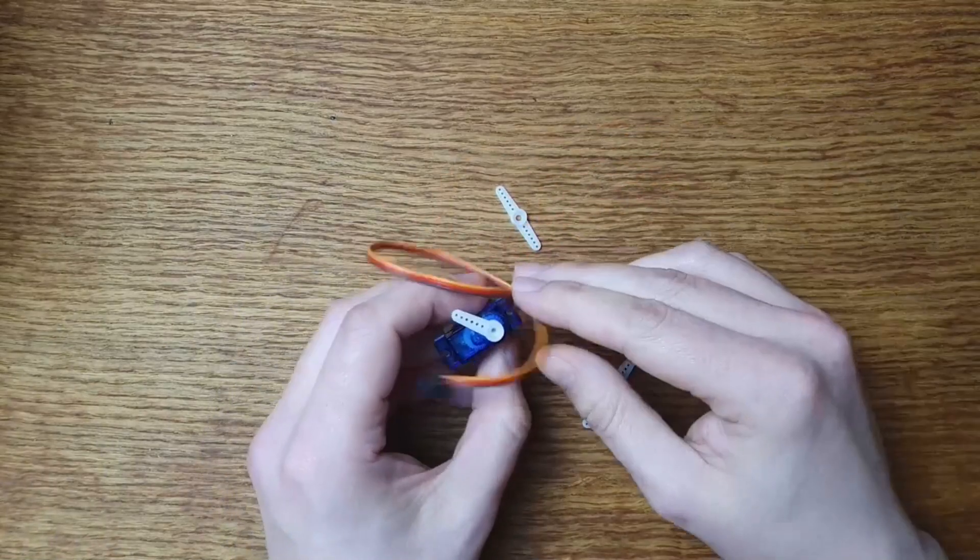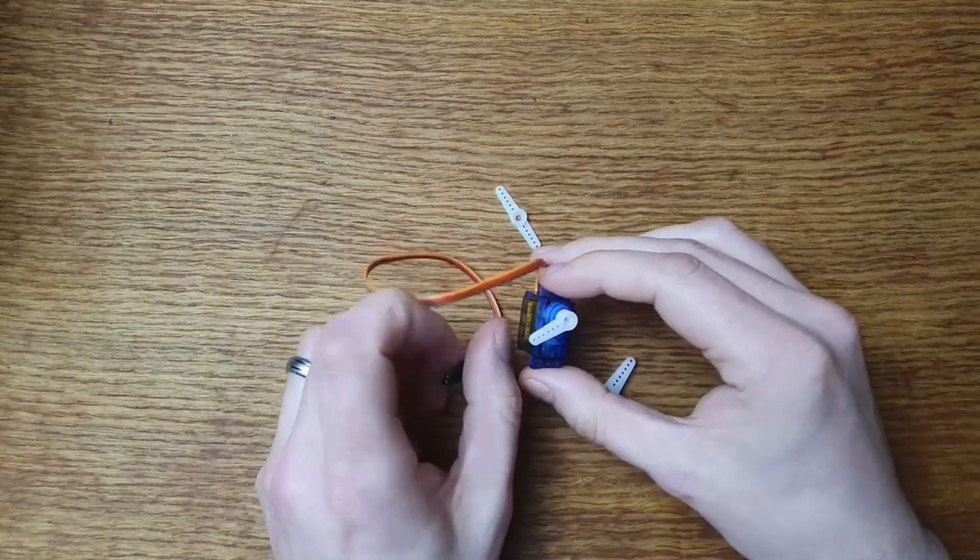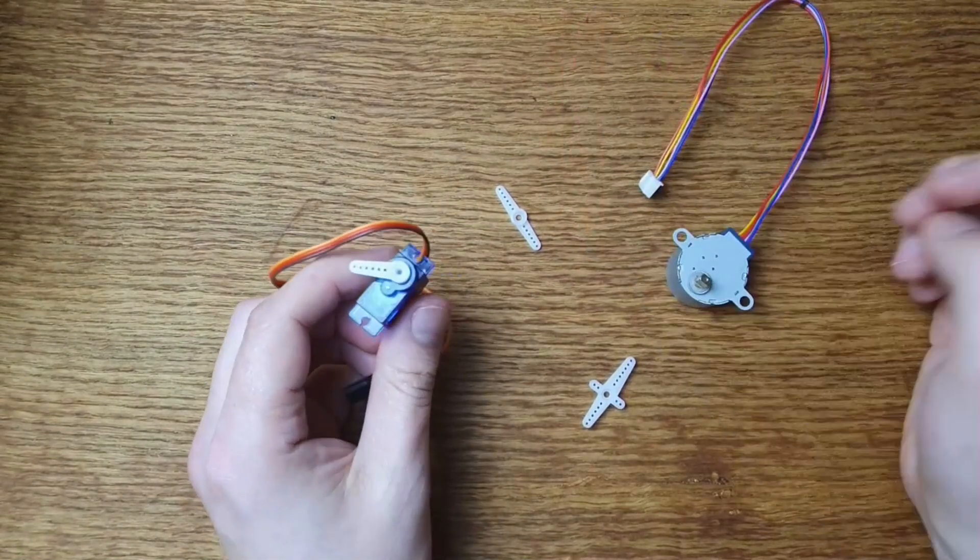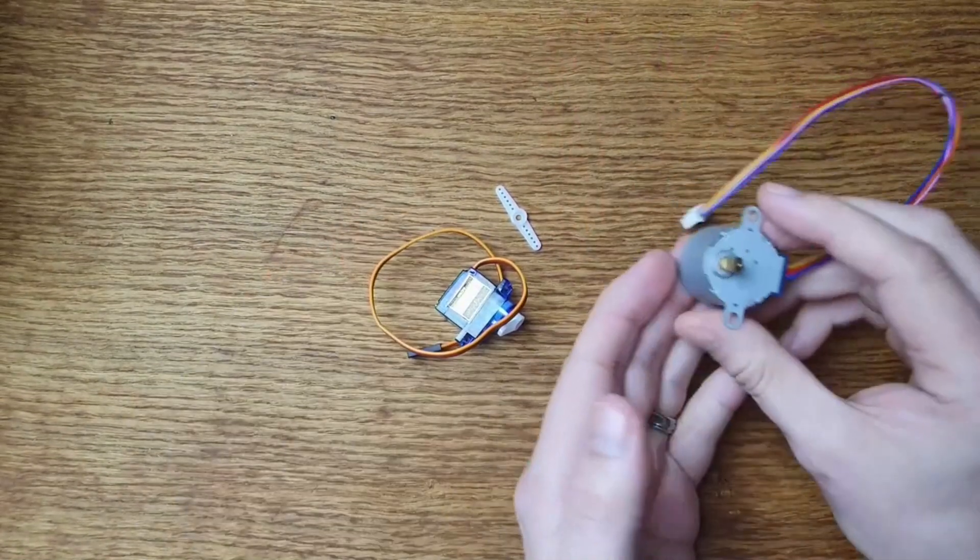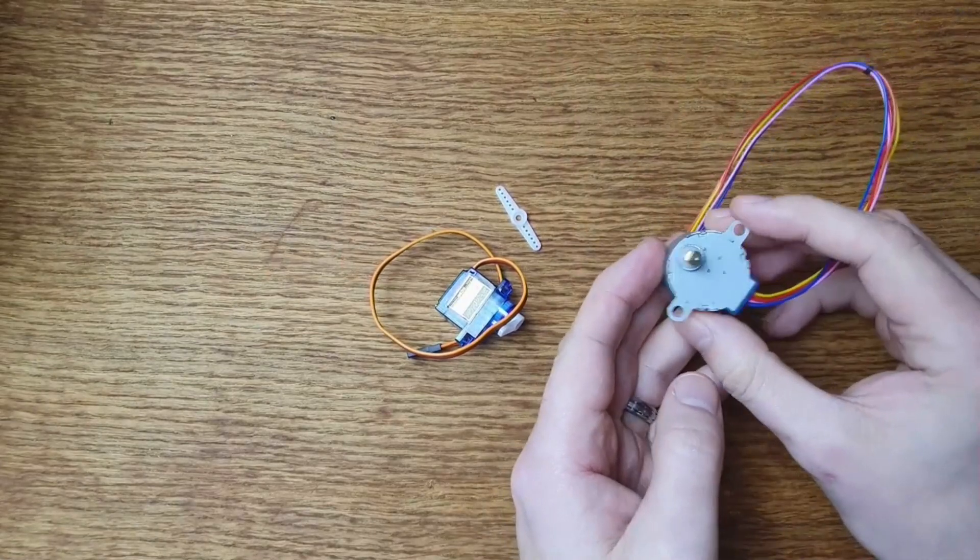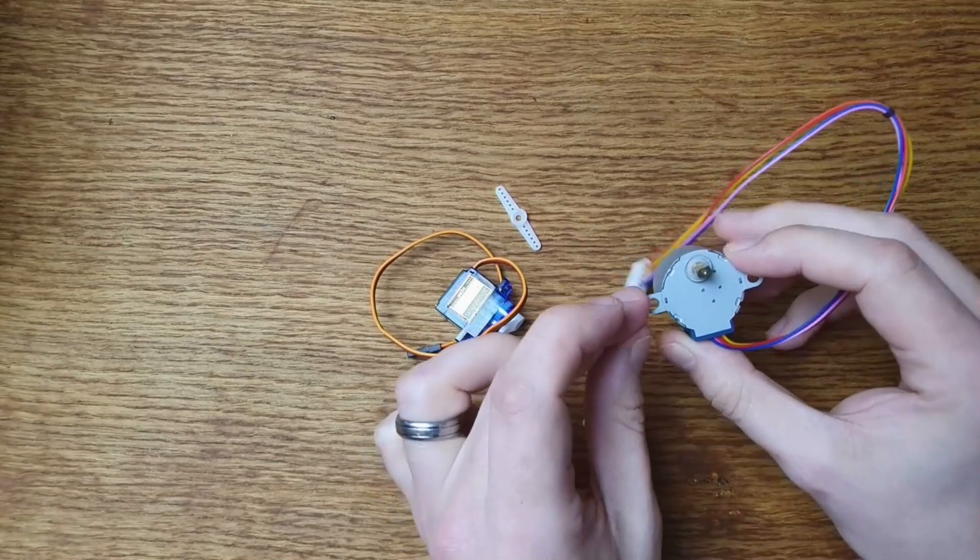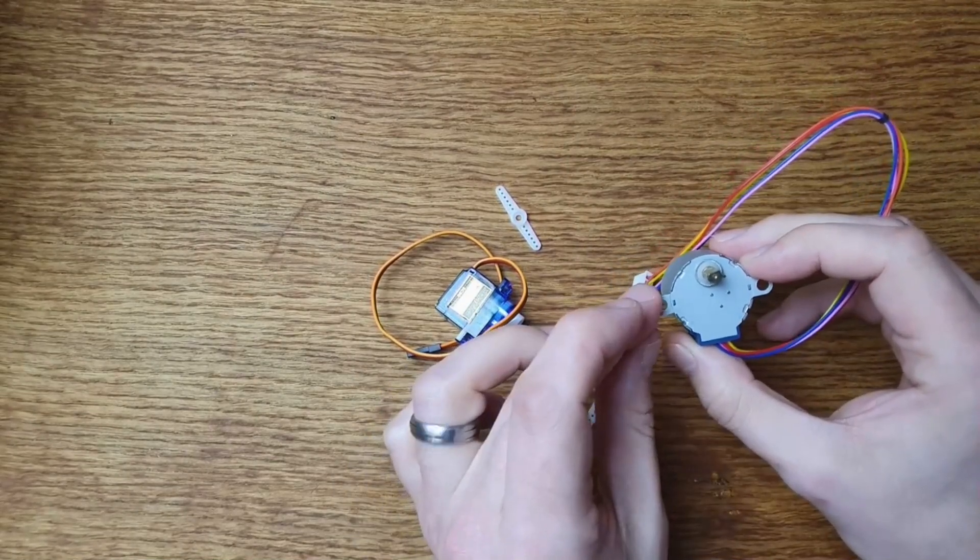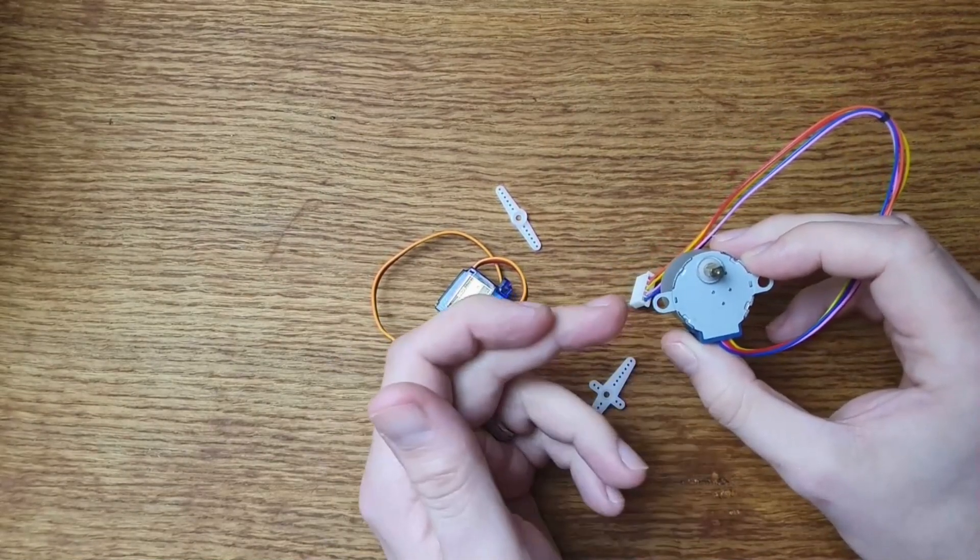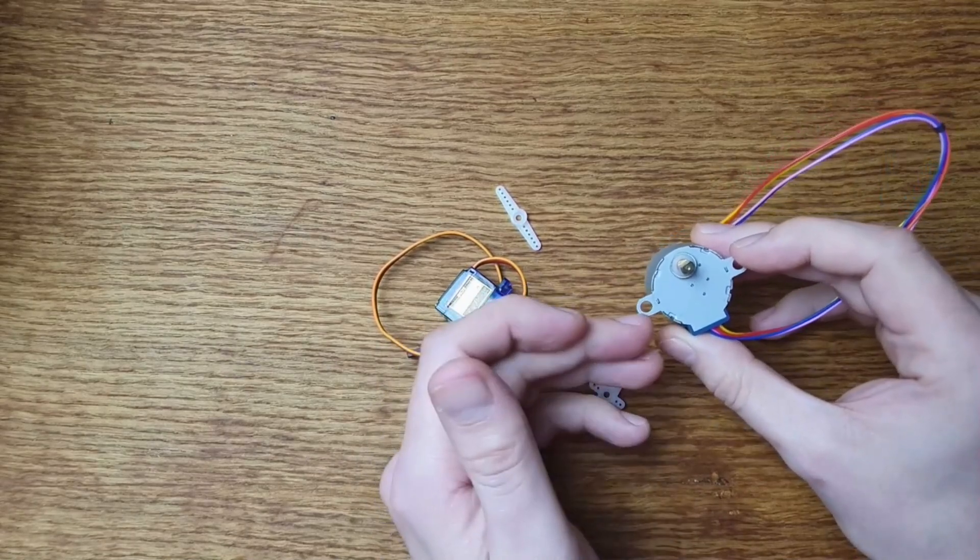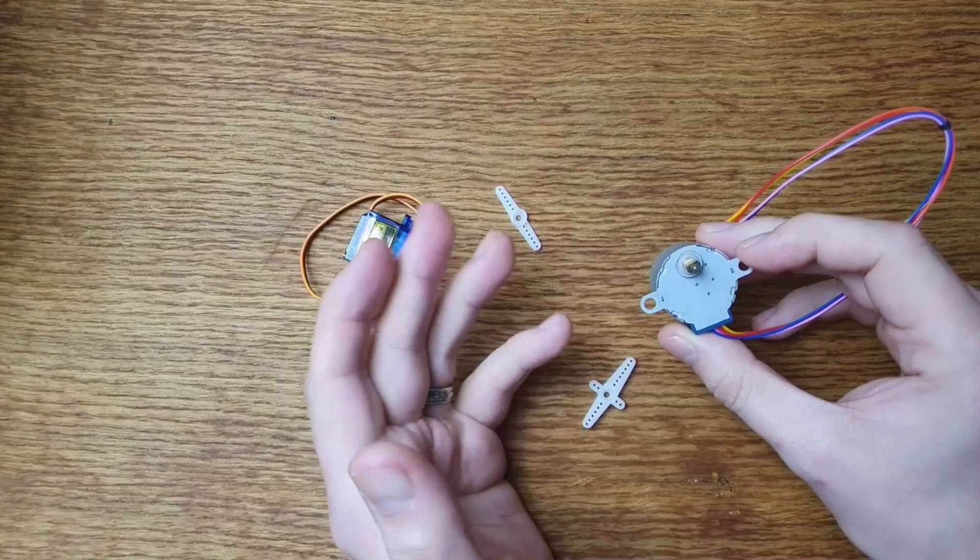So what is a servo motor? Well, the stepper motor that we looked at previously, this guy here, this moves using relative positioning. That is to say that each movement you make with it is stacked on top of all of the previous movements you've made. So if I'm at the zero degree position with this stepper motor and I say move by 10 degrees, then I'm going to end up at the 10 degree position.